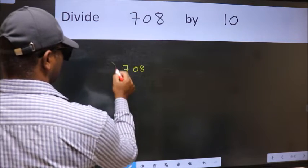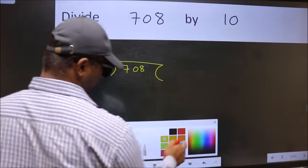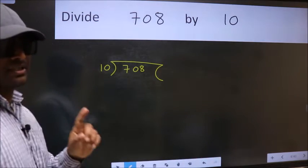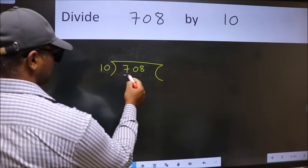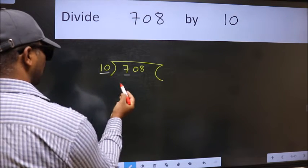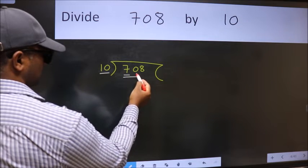708 here, 10 here. This is your step 1. Next, here we have 7 and here 10. 7 is smaller than 10, so take two numbers: 70.